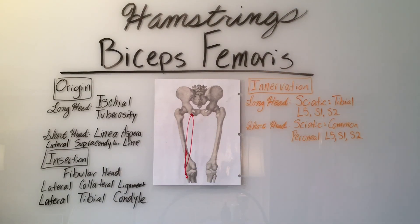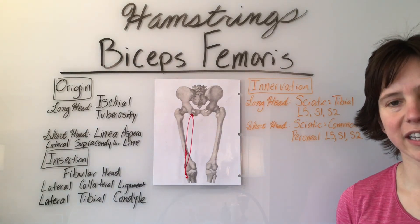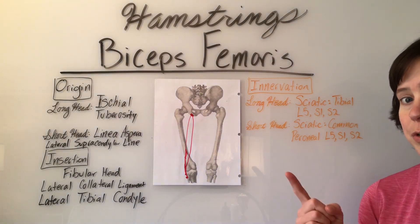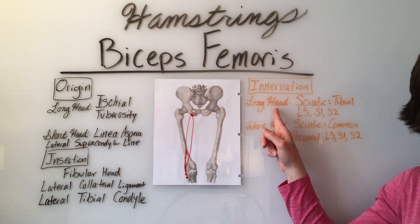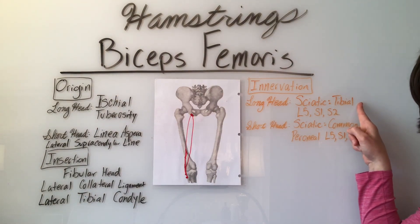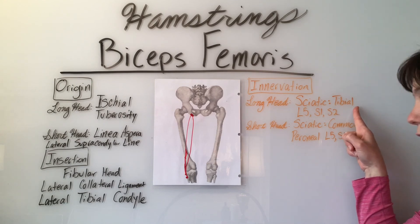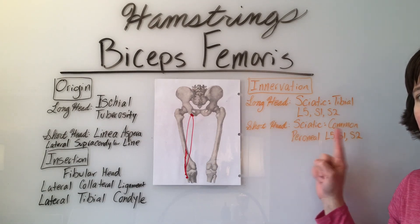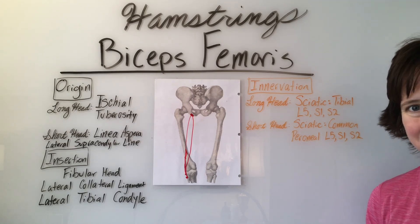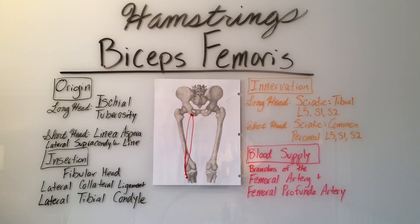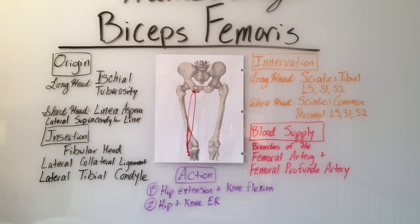The biceps femoris is essentially innervated by the sciatic nerve, but the sciatic nerve is made up of two components: a tibial division and a common peroneal or common fibular division. The long head of the biceps femoris is innervated by the tibial division of the sciatic nerve — L5, S1, S2 — and the short head is innervated by the common peroneal division of the sciatic nerve, L5, S1, and S2. The blood supply is provided by branches of the femoral artery and femoral profunda artery. The primary actions of the biceps femoris are hip extension and knee flexion. Secondarily, the biceps femoris will perform hip and knee external rotation.